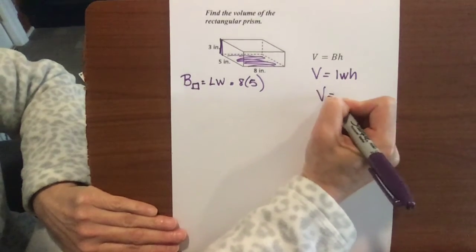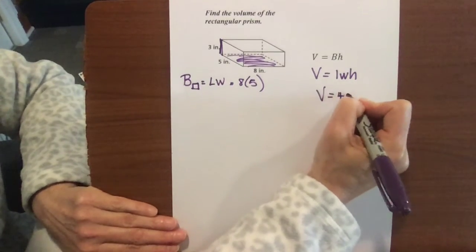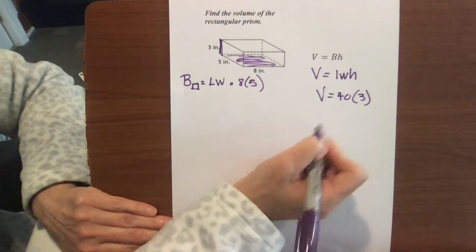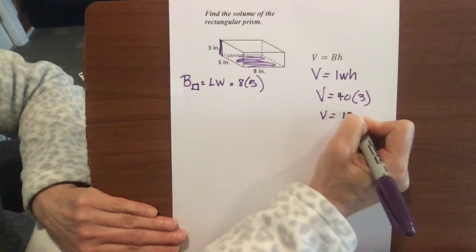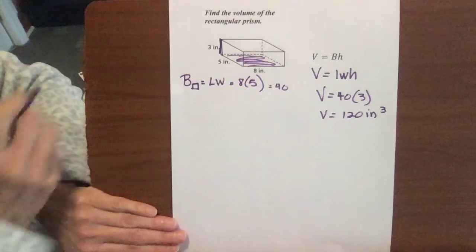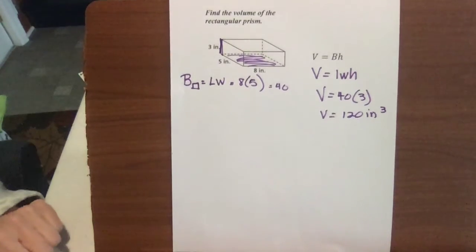So the volume here, very easily, is going to be 40 times our height, which is 3, or it's going to be 8 times 5 times 3, and that's going to be 120 inches cubed for volume, and that's it. I'm going to just finish up our little notes there. So that's easy enough, and I don't think that's really new for you folks.